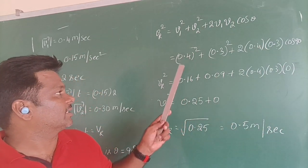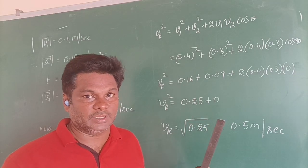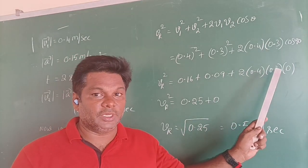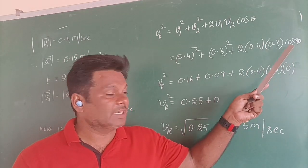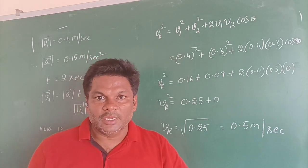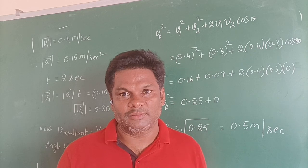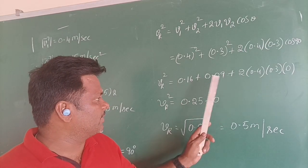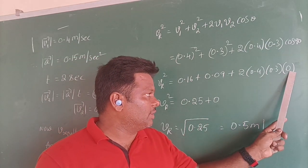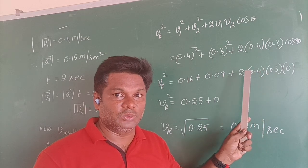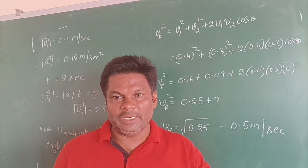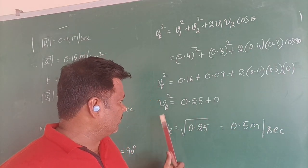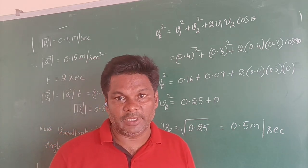By simplifying this, 0.4 whole square is equal to 0.16, 0.3 whole square is equal to 0.09, plus 2 into 0.4 into 0.3 into 0. Why we are writing 0 here instead of cos 90? According to our trigonometry, cos 90 is always equals to 0. By simplifying these two, they can be added as 0.25, and this 0 is multiplied with the rest. If you are multiplying with 0, the total term will become 0. You will get 0.25 only. VR is equal to root over 0.25, equals 0.5 meter per second.